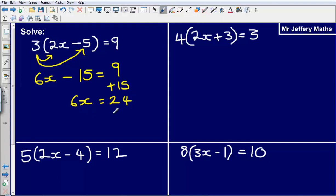So that leaves me with 6x is equal to 24. Next thing that I'm going to do is divide by 6 to undo this multiply by 6 that we've got here. So x is equal to 24 divided by 6, so x is equal to 4.